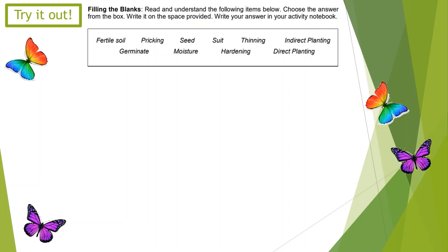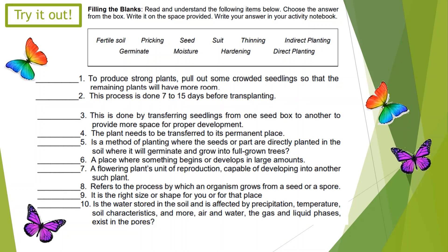Your choices are: fertile soil, pricking, seed, soot, thinning, indirect planting, germinate, moisture, hardening, and direct planting. Number 1: To produce strong plants, pull out some crowded seedlings so that the remaining plants will have more room. The correct answer is thinning.